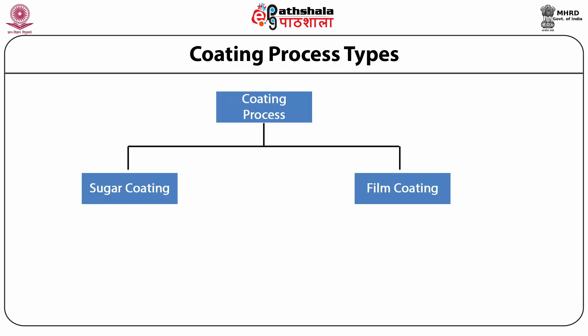Coating of binder solution, such as gelatin or gum arabic, called the sub-coating step, increases bonding strength between an uncoated tablet and the sugar coating layer. The sugar coating layer fills imperfections and is also used to impart color to the tablets. The batch coating time of sugar coating is usually 8 hours or more, and it increases tablet weight by 30–50%. Sugar coated tablets have a high degree of polish.